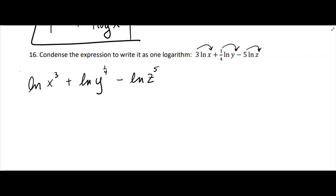So we have one natural log now and it's going to be x cubed y to the one-fourth over z to the fifth, because that was being subtracted, the z to the fifth, so that's got to go in the denominator. We have written it as one logarithm. There's just one more thing I'm going to do because they usually do this.